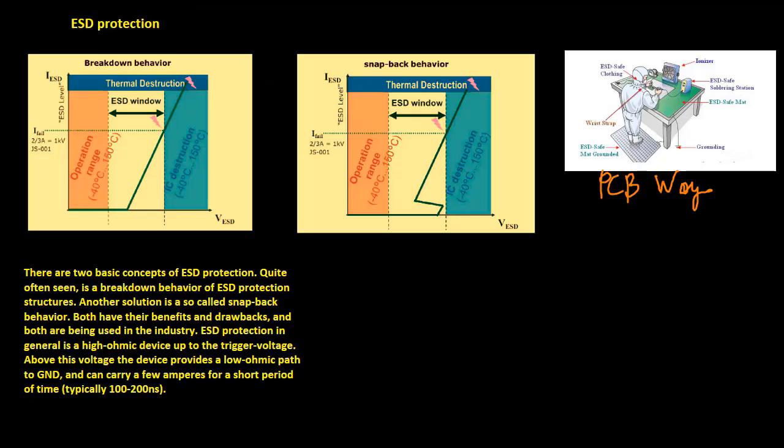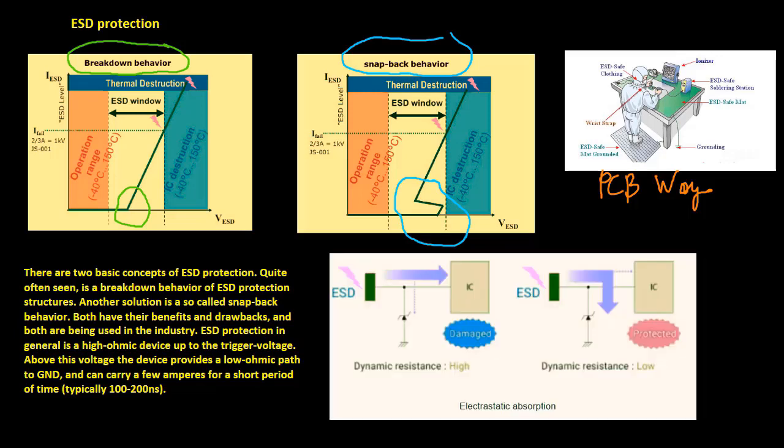There are two basic concepts of ESD protection. Quite often seen is a breakdown behavior of ESD protection structures. Another solution is a so-called snapback behavior. Both have their benefits and drawbacks, and both are being used in the industry. ESD protection in general is a high ohmic device up to the trigger voltage. Above this voltage the device provides a low ohmic path to ground and can carry a few amperes for a short period of time.